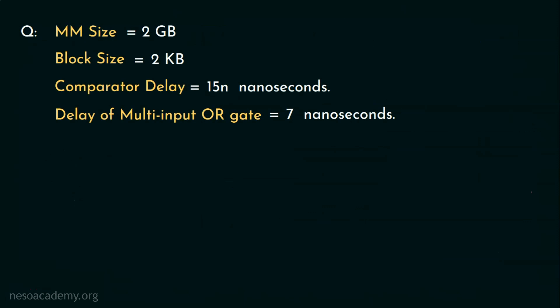Suppose these informations are given and they are asking us about the hit latency. Let's try to solve it. The main memory size is given as 2GB which is 2 to the power 1 times 2 to the power 30 which sums up to 2 to the power 31 bytes. Assuming the memory to be byte addressable, we can figure out the number of PA bits which is 31.